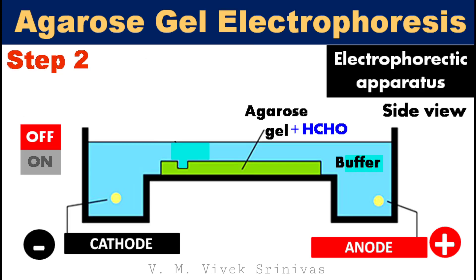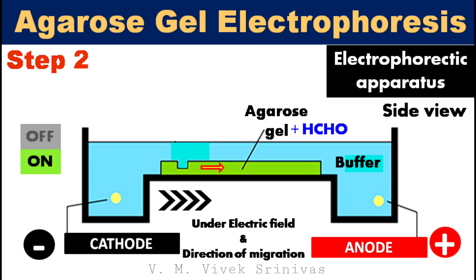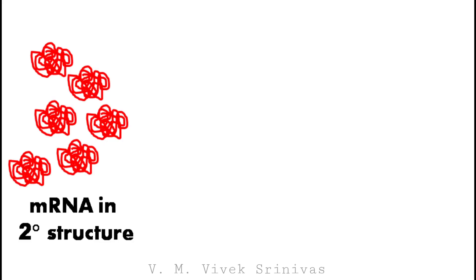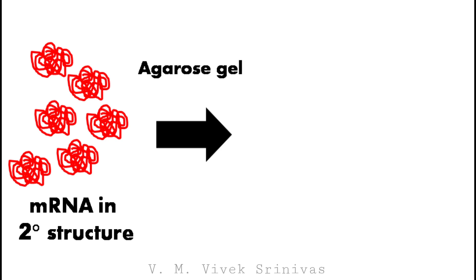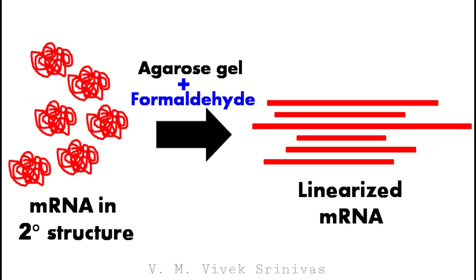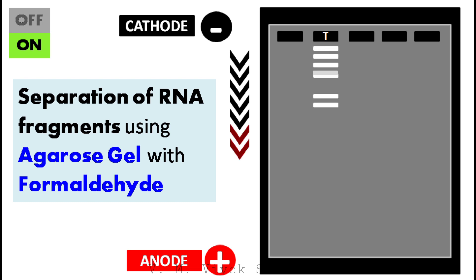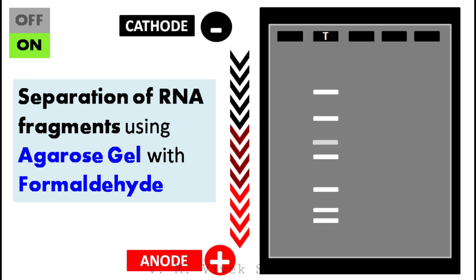Step 2: The isolated total RNA molecules are run over agarose gel electrophoresis using a horizontal electrophoretic apparatus to separate the RNA fragments based on their size. Agarose gel containing formaldehyde, which is a denaturing agent for RNA, is used. Generally, RNA forms a secondary structure which interferes with RNA separation over agarose gel. The addition of formaldehyde to the agarose gel breaks the secondary structure of the RNA, which facilitates RNA fragment separation. On gel electrophoresis, the smaller fragments move fast and the larger fragments stay behind.